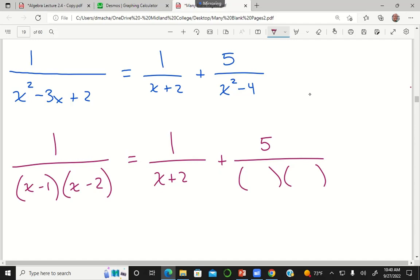And then over here, this is one of those difference of squares that I was mentioning earlier. This is x squared minus 2 squared. So that has to factor as x plus 2 times x minus 2.